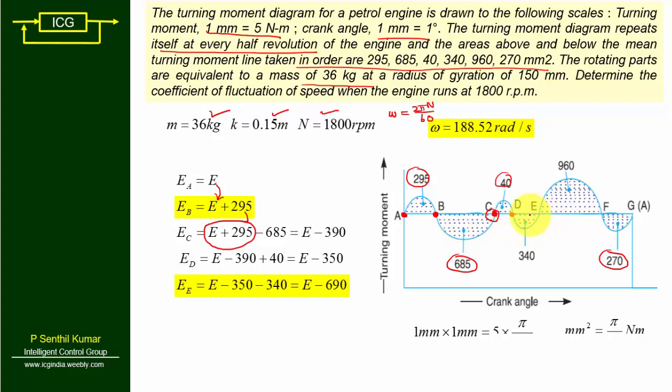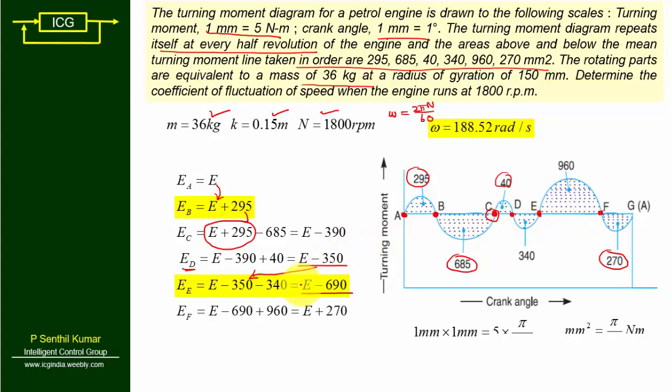Energy at point E = E − 390. Energy at point F = E − 270 + 960... simplifying: energy at F = E − 270 + 270 = E. The starting value is E and the ending value is E, which confirms the calculations are consistent — the energy cycle closes correctly after one half revolution.